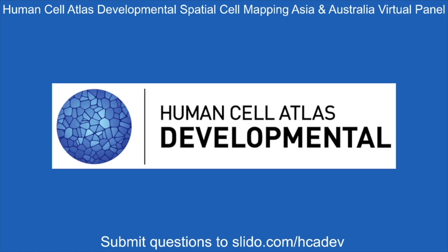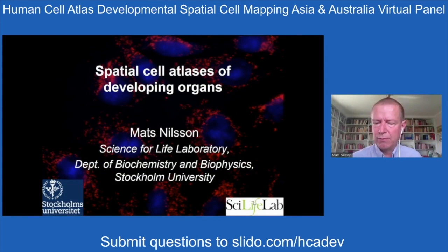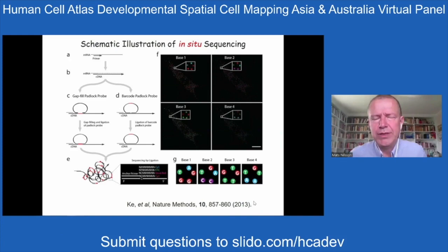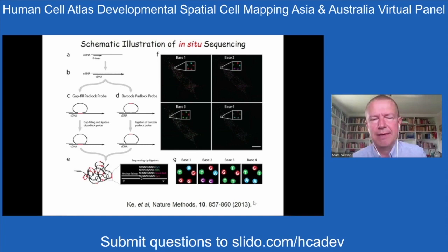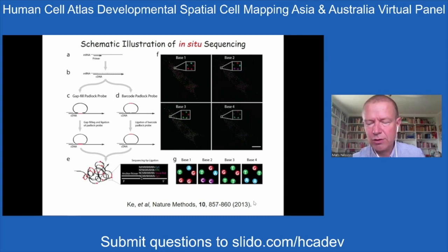Thanks for the introduction. I'll briefly summarize this seminar. The method we use is a targeted approach to profile sets of genes relevant for analysis. We use a Padlock Probe RCA-based approach, where we target sets of transcripts by particular molecules that become amplified by RCA, generating very bright detection signals in situ, making it possible to screen with no magnification objective for wide-field imaging of hundreds of genes in parallel.